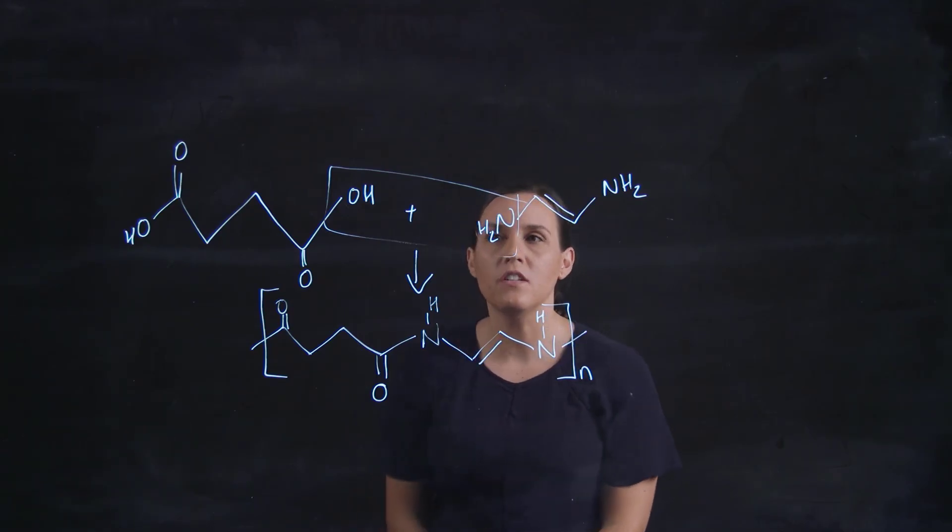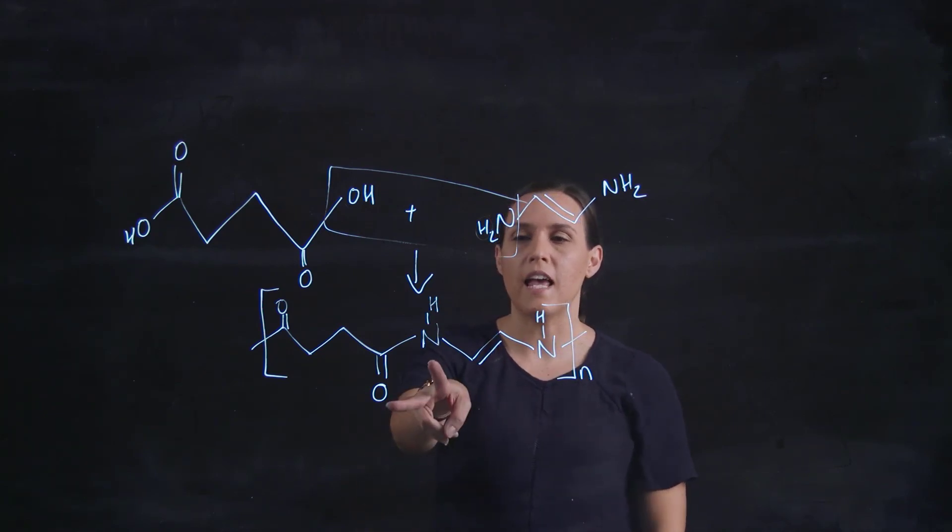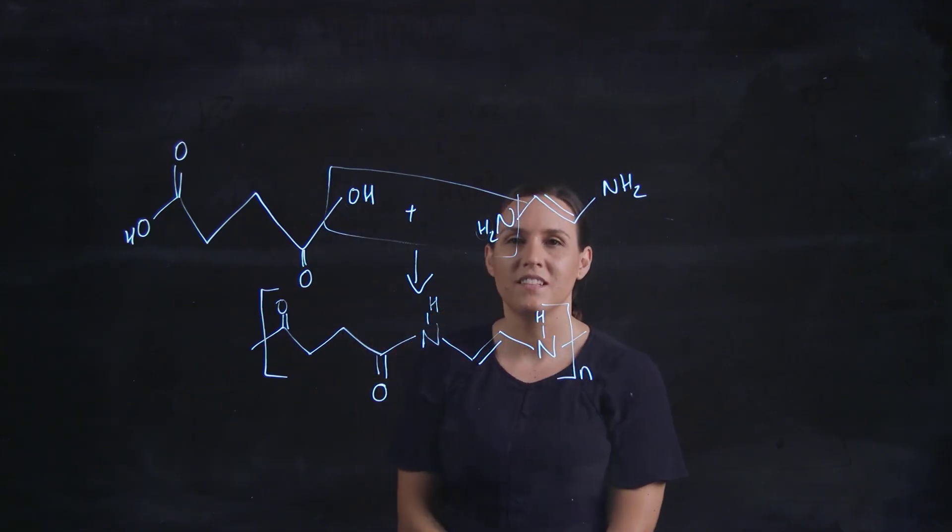So that is a condensation. So we've got the loss of water and it's a polymerization reaction and we've made an amide functional group from a carboxylic acid and an amine. So thank you very much for watching this video and I'll see you next time.